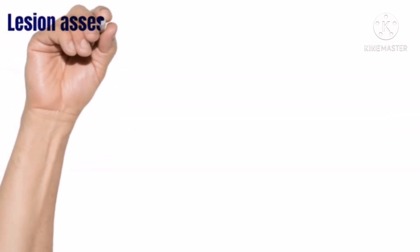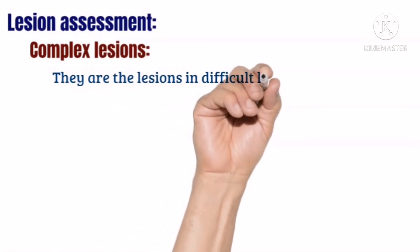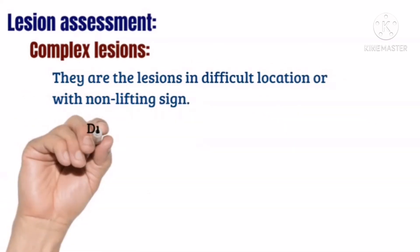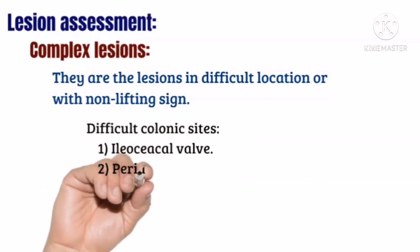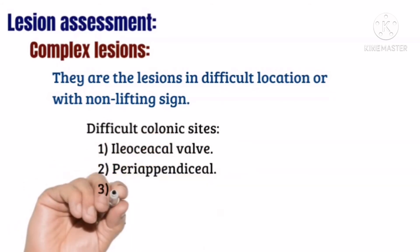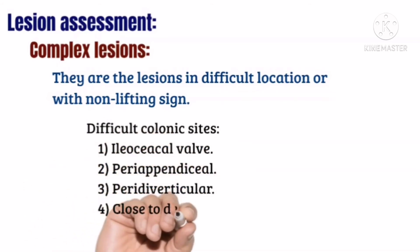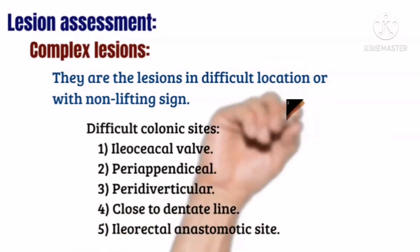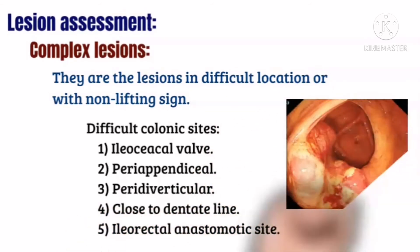Complex lesions are those located in difficult sites or lesions with a non-lifting sign. Difficult colonic sites include the ileocecal valve, the periappendiceal area, near diverticula, close to the dentate line, or at ileorectoanastomotic sites.